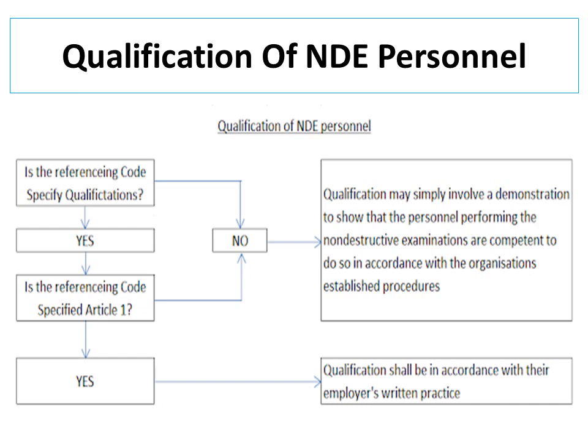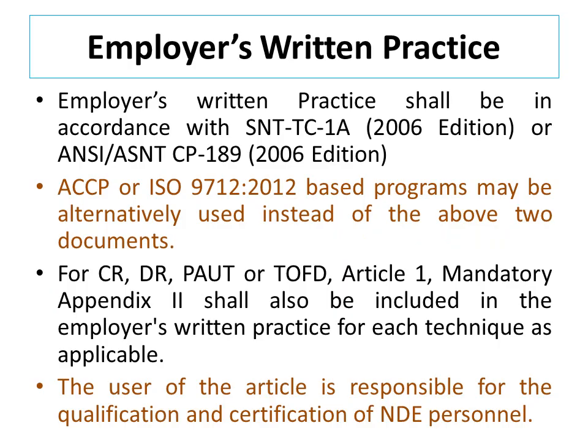The organization's established procedures are followed when the referencing code is silent or does not mention Article 1 for qualification. The written practice is followed when the referencing code specifies qualification shall be in accordance with SNT-TC-1A 2006 edition or ANSI-SNT-CP-189 2006 edition. ACCP or ISO 9712-2012 edition based programs may alternatively be used instead of the above two documents.